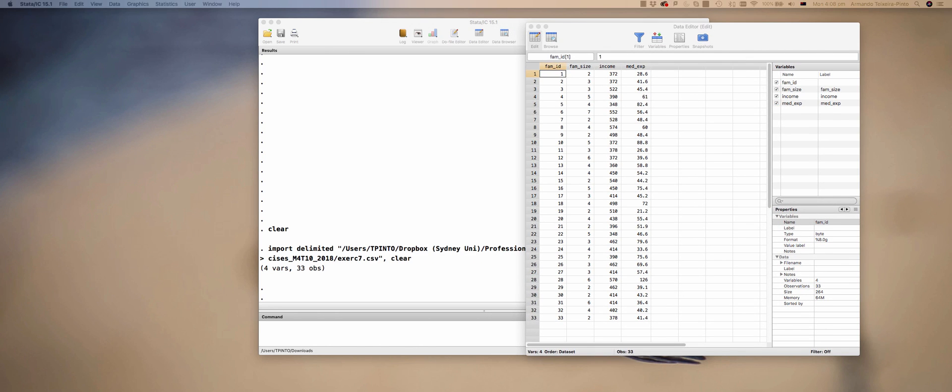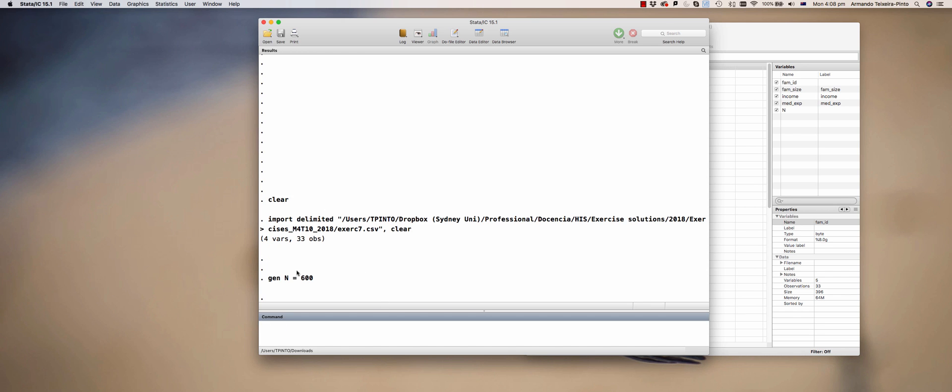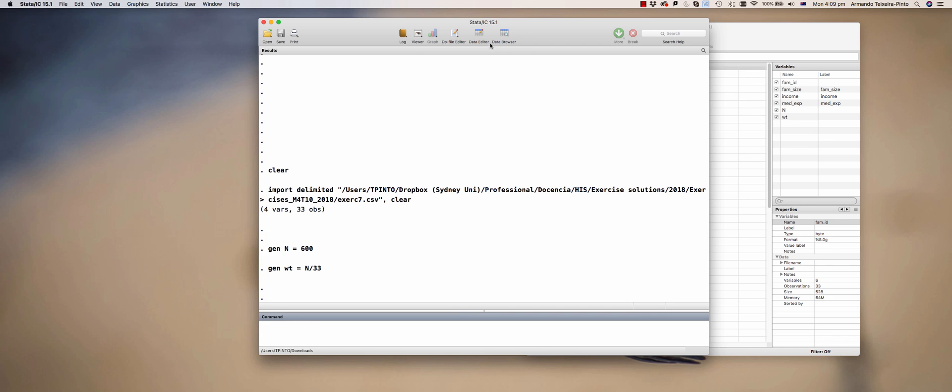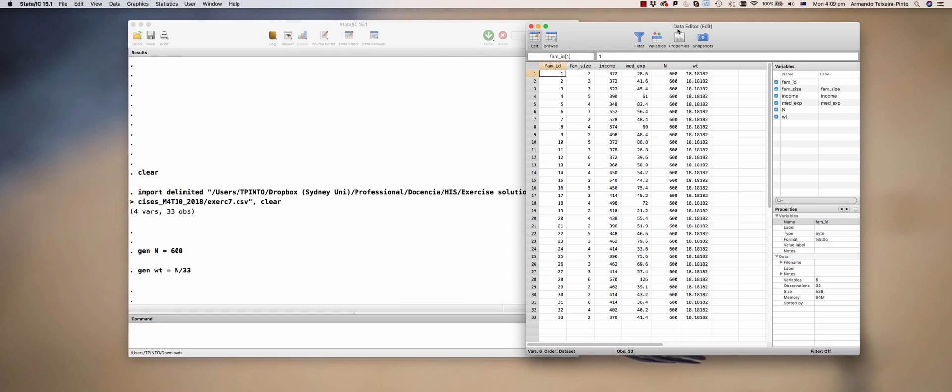First, I'm going to generate the variable N with the total number of families, capital N, the weights, the variable that we're going to represent the weight, that's going to be 600 divided by 33. This is the weight for each family.